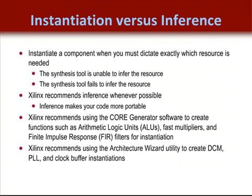Most designs will require at least some instantiation of dedicated hardware resources, because all synthesis tools have limitations on their ability to infer all FPGA resources. This is especially common when the dedicated hardware has flexibility to be used in many applications — for example, the DSP Slice can be used for multipliers, large MUXs, MAC functions, filters, ALUs, et cetera. While we recommend inference if possible, when you instantiate components, try to place the instantiations in one location, usually at the top level of your design. This makes it easier to port your code to another device family or technology later on while reusing as much of your generic HDL as possible. We also recommend using the core generator and architecture wizard to create your optimized components. These utilities are a standard part of the ISE tools and are included with the toolkit.